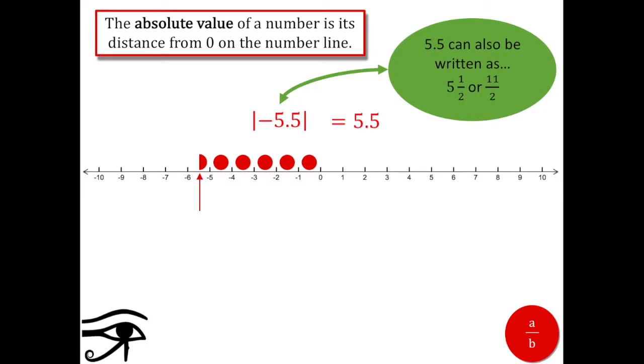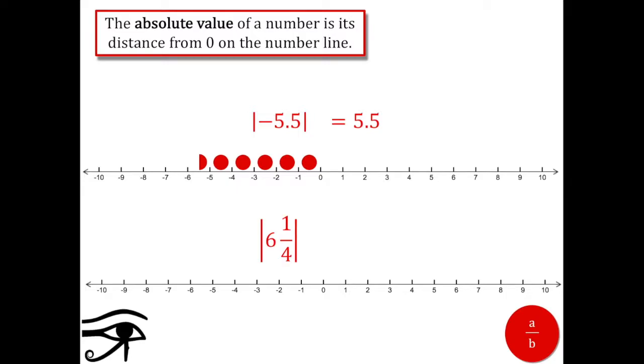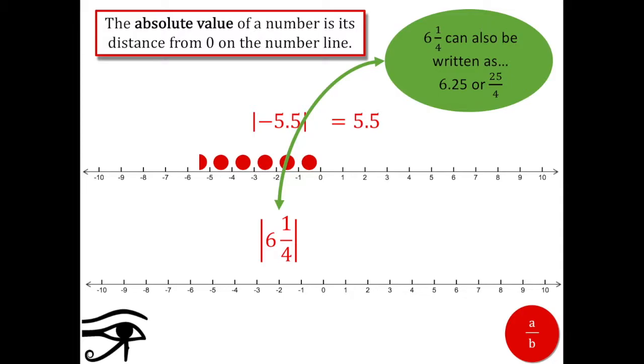One more. Let's look at the absolute value of six and one-fourth, which could also be written as six point two five or twenty-five over four. Let's see, six and a fourth sits right about here.